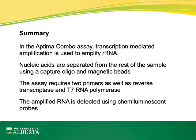In summary, in the Aptima combo assay, transcription-mediated amplification is used to amplify ribosomal RNA. Nucleic acids are separated from the rest of the sample using a capture oligo that binds the target ribosomal RNA and magnetic beads. The assay requires two primers or oligos, as well as reverse transcriptase and T7 RNA polymerase. The amplified RNA is detected using chemiluminescent probes.